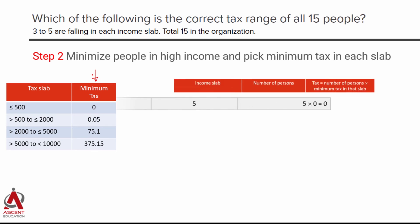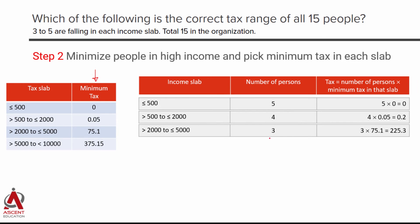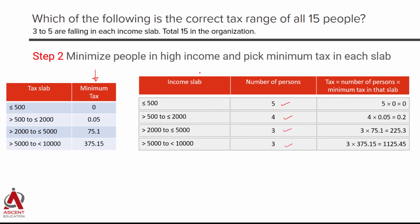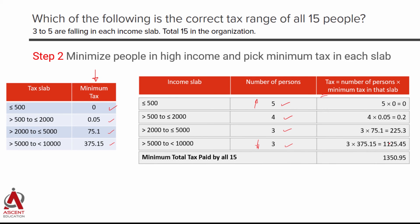With 5 people at zero tax = 0; 4 people at 5 paise each = 0.20; 3 people at 75.10 each = 225.30; and 3 people at 375.15 each = 1125.45 — the total minimum tax is 1350.95 rupees. So the tax is a little more than 1350, not including 1350 itself. This gives us the low end of the tax range for all 15.